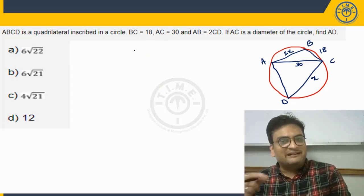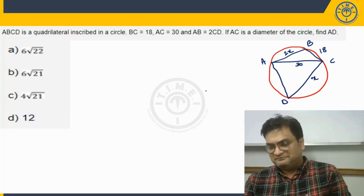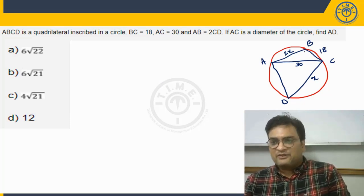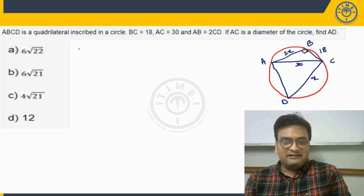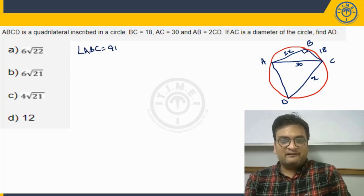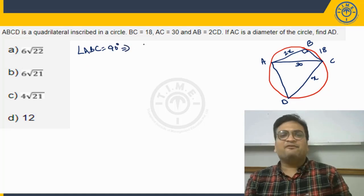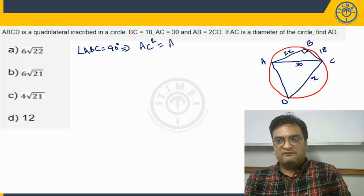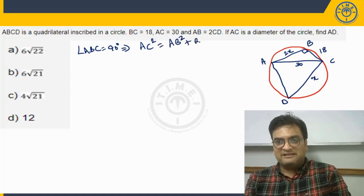So that is the property that we have in case of circle. The property is angle in a semicircle is 90 degrees. So since AC is the diameter here, can I say this angle ABC is going to be 90 degrees. So the moment it is 90 degrees, we can apply Pythagoras theorem. That would mean what? AC square will be equal to AB square plus BC square.